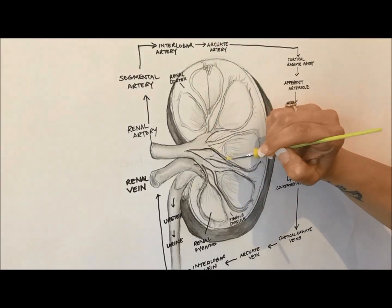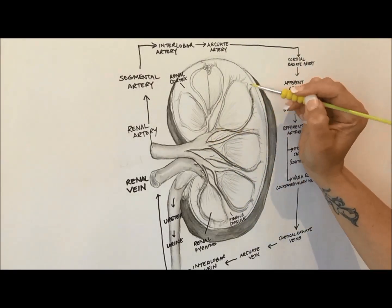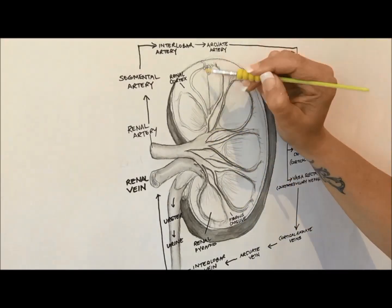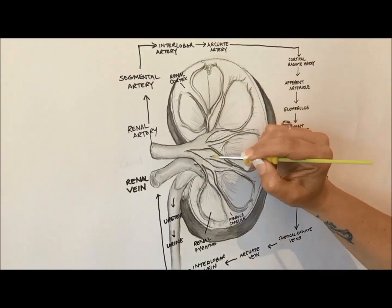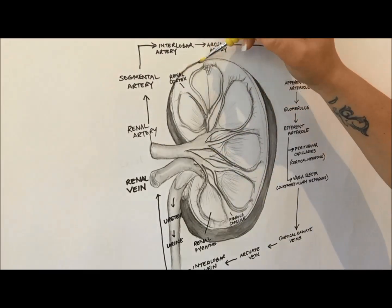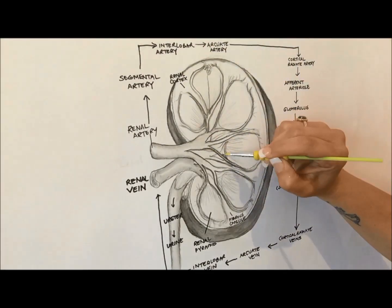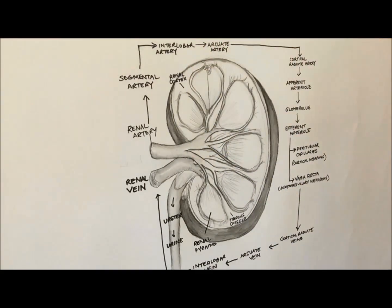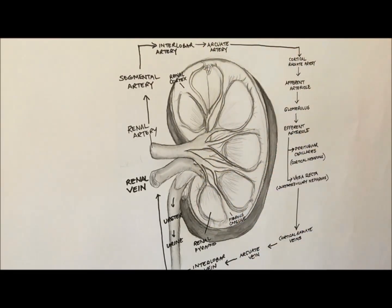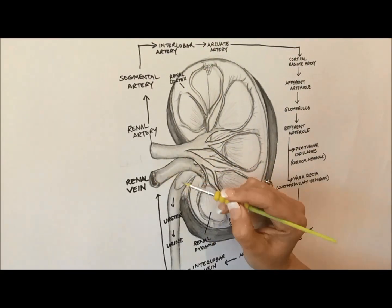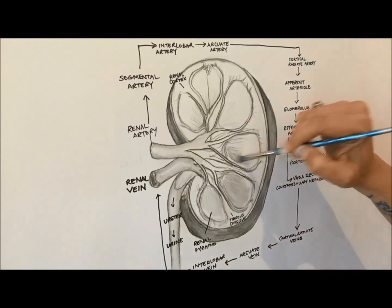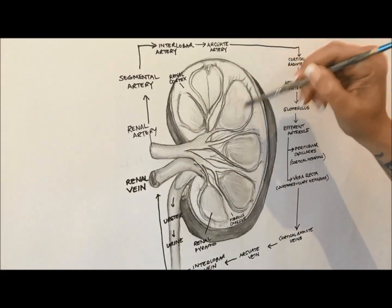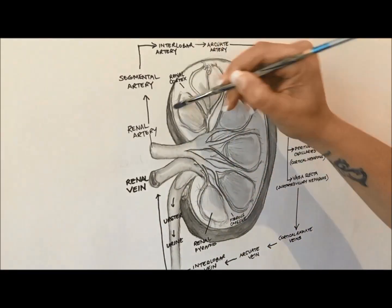The kidneys are a major functional unit of the circulatory system and abundantly supplied with blood vessels, as they receive 20–25%, about 1.2 litres, of all the blood in the body via the renal arteries every minute.